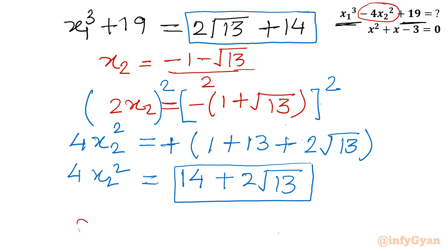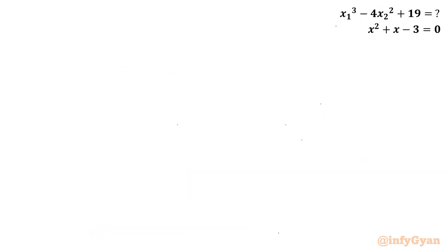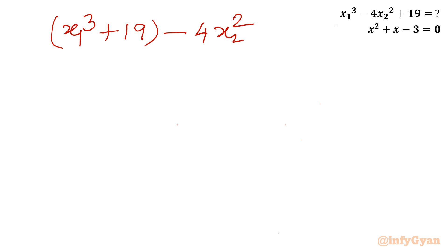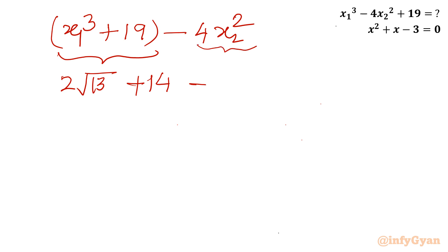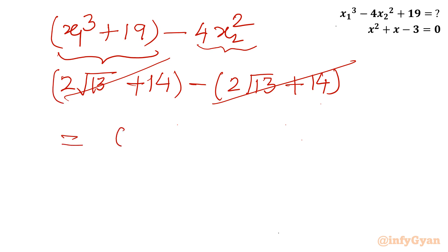Now we calculate x1³ - 4x2² + 19 = (x1³ + 19) - 4x2² = (2√13 + 14) - (2√13 + 14) = 0. Both brackets cancel, and our final answer is 0. This brings the end of the video. I hope you liked it — don't forget to like, share, and subscribe. Bye-bye till the next video, good luck, take care!